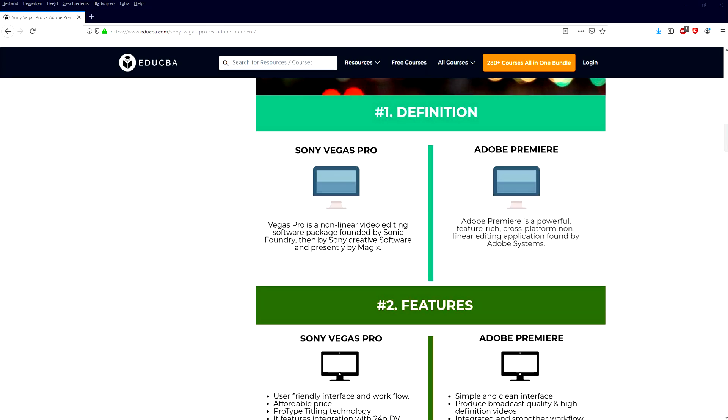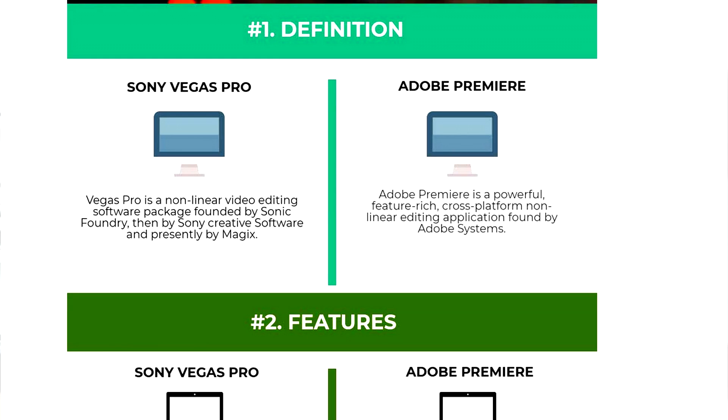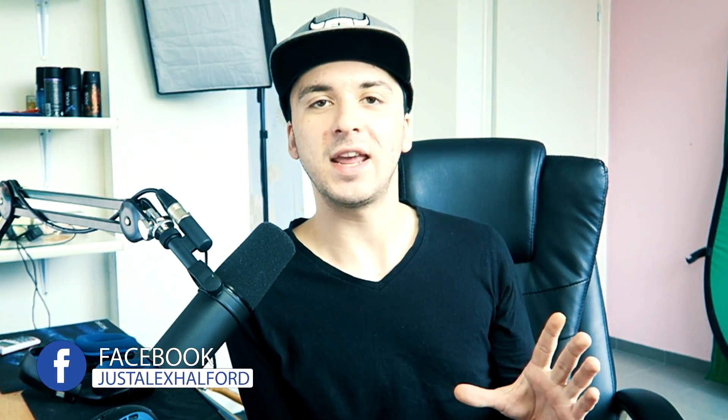Alright guys, so basically Vegas Pro 17 released, I think on the 5th of August last month. This software is now packed with tons and tons of features. For the people who don't know, Vegas Pro is a non-linear video editing software package founded by Sonic Foundry, then by Sony Creative Software and presently by Magix. At first back in the day it was Sony Vegas, made by Sony obviously. Then Sony didn't really see any future in that software, so Magix thought, let's just buy this software from Sony, and they blew new life into it, and it blew up actually quite a bit.